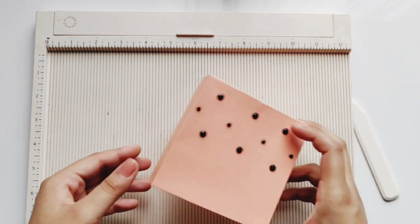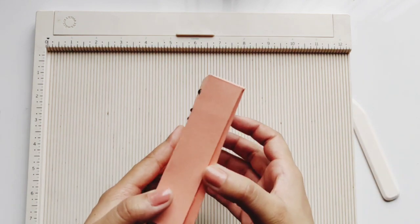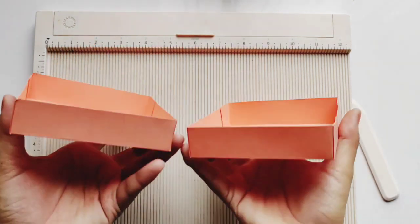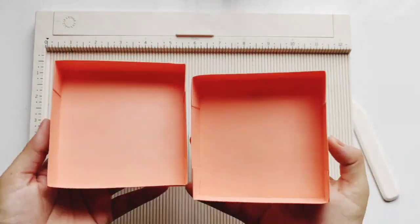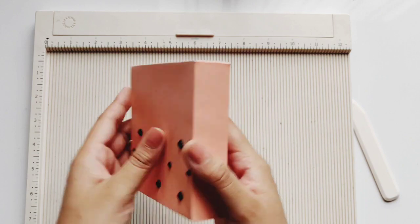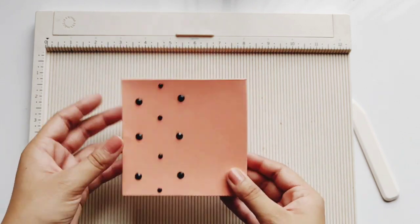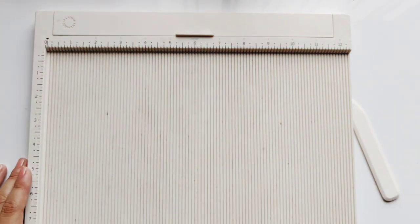Moving on to the fourth use, you can use scoring board to make boxes. It's very easy to make boxes using scoring board using two pieces of squares and scoring at different marks. It's easy and you can make a lot of boxes in one go.